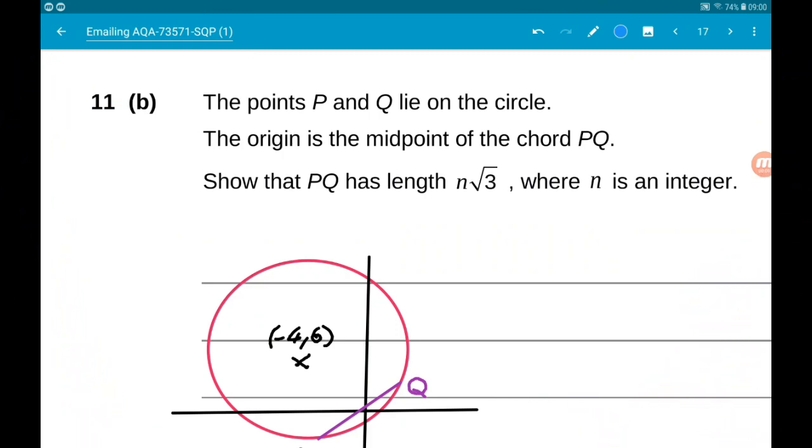Okay, part B is a little bit more fun and worth 5 marks. So points P and Q lie on the circle. The origin is the midpoint of PQ. We want to show that the length of PQ has length n root 3 where n is an integer.